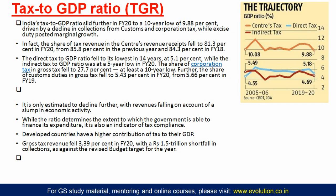Now we look at trends in India's tax-to-GDP ratio, important for prelims examination. India's tax-to-GDP ratio has slid further and in financial year 2020 it is at a 10-year low. The overall tax-to-GDP ratio is now 9.88 percent only. This decline is mainly due to a fall in collection from custom duty and corporation tax, with only marginal growth in excise duty.